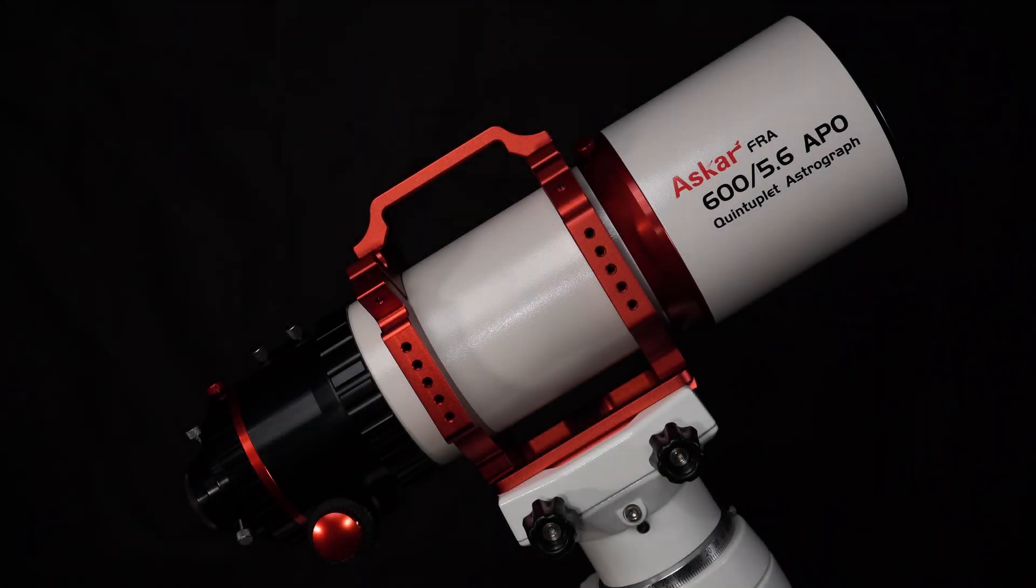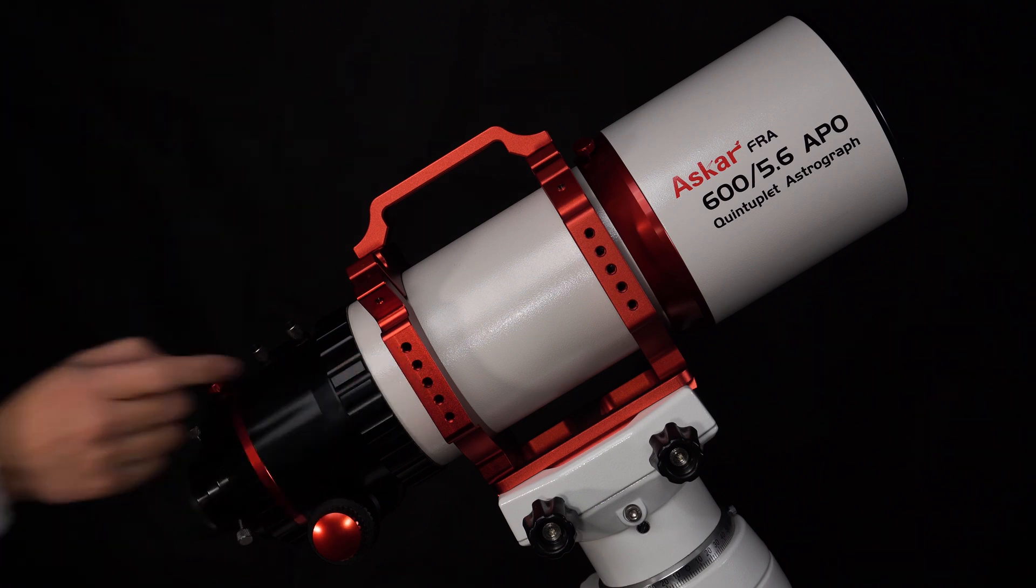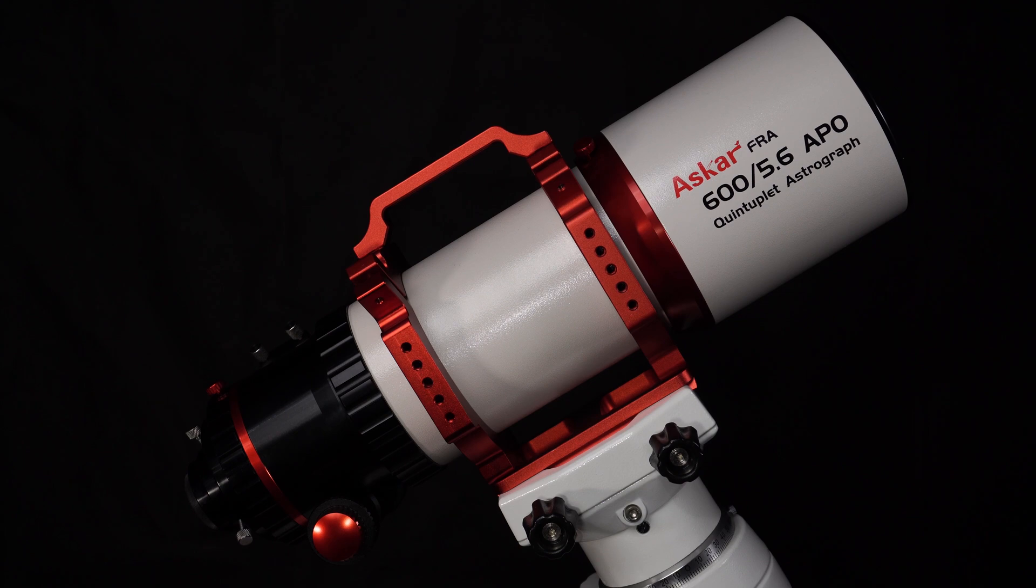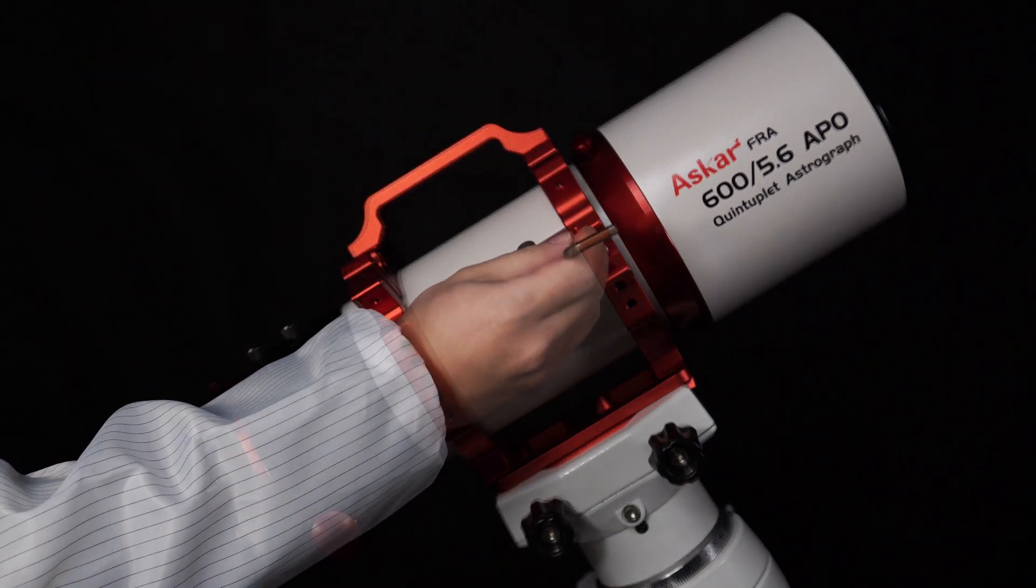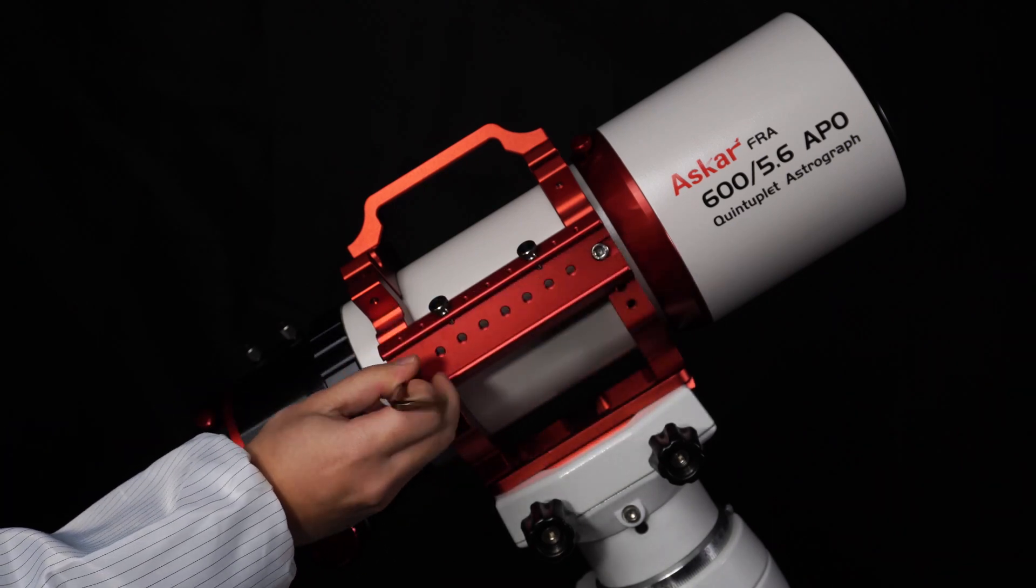There are many factory-made threaded holes on the pair of tube rings, which enables different kinds of accessory attachments. This is an example of attachment of Oscar multi-connection plate.